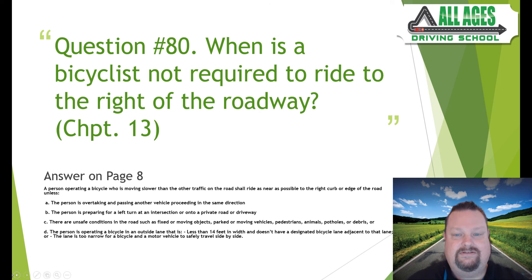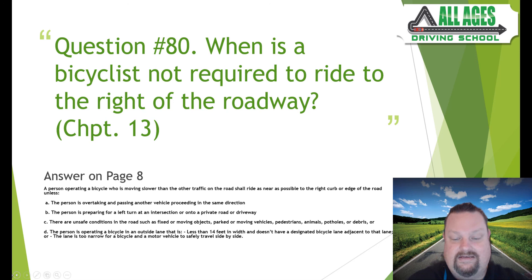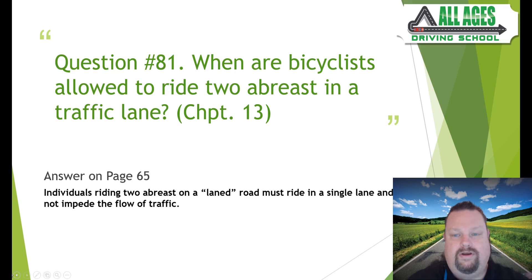Question number eighty: when is a bicyclist not required to ride to the right of the roadway? Chapter 13, page 8. A bicyclist moving slower than traffic shall ride as close to the right curb as possible unless: overtaking and passing another vehicle, preparing for a left turn, there are unsafe conditions on the road such as fixed or moving objects, or operating in an outside lane that is less than 14 feet in width without a designated bicycle lane adjacent to it.